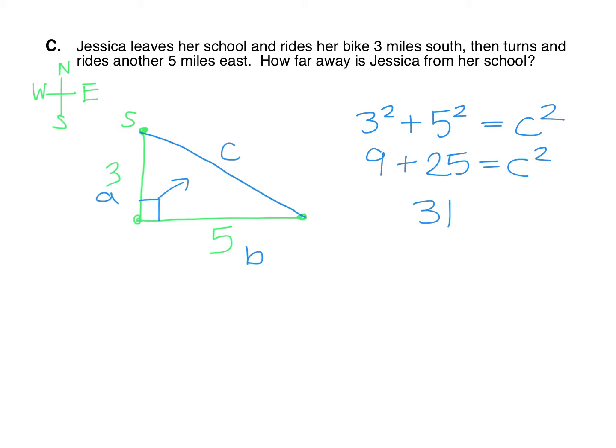Add that up. We've got 31. And then if we take a square root of 31, that is going to be 5.5677, etc. We want to round to the tenths place.